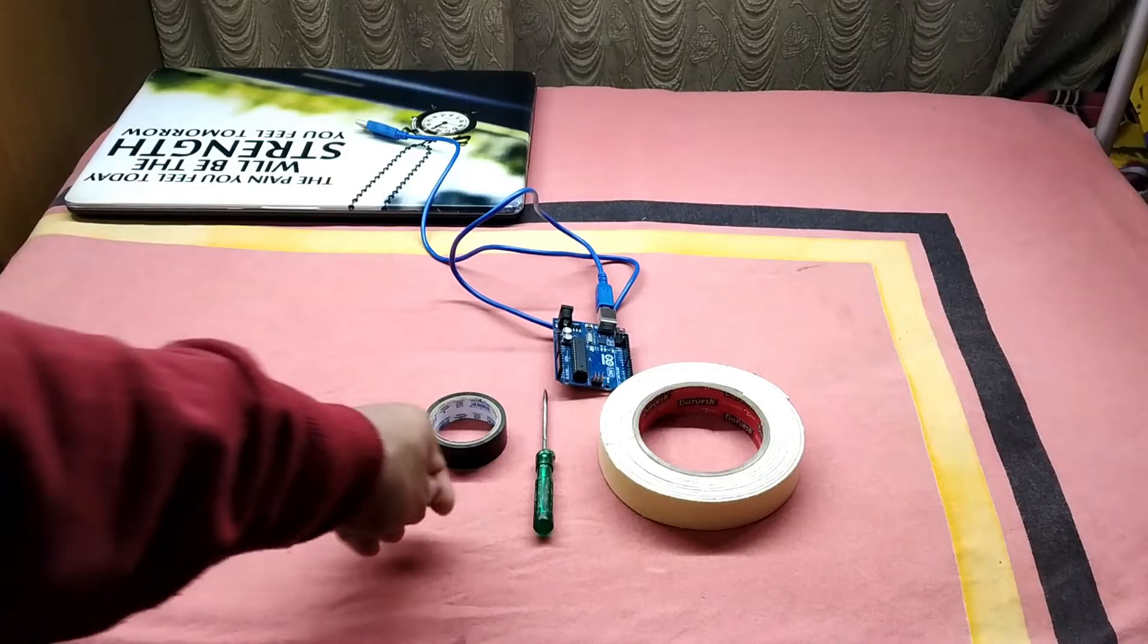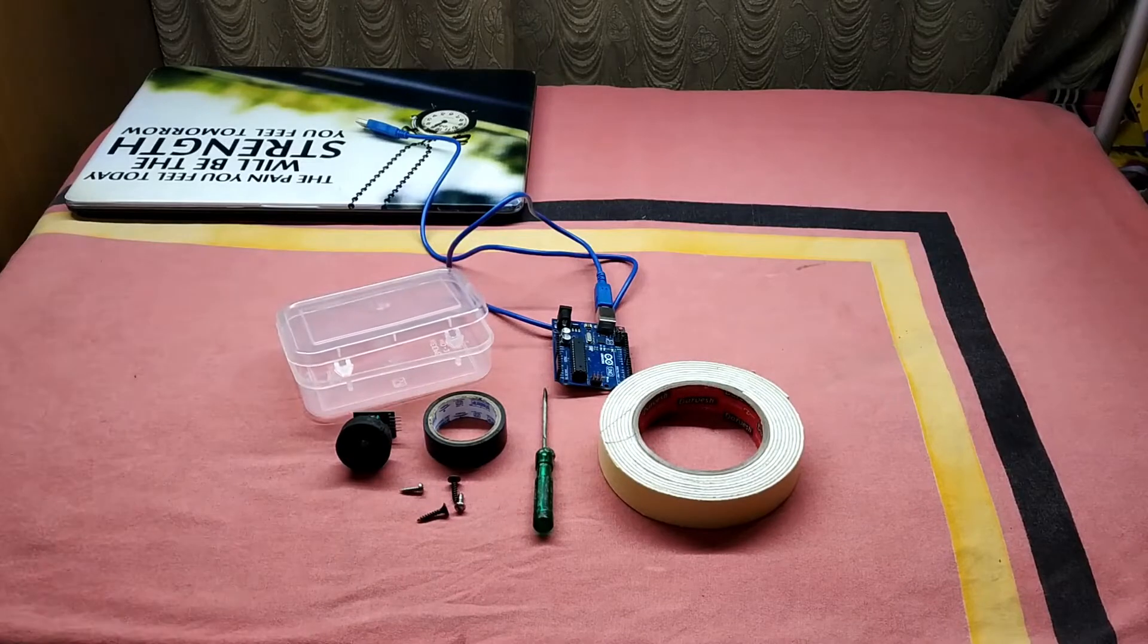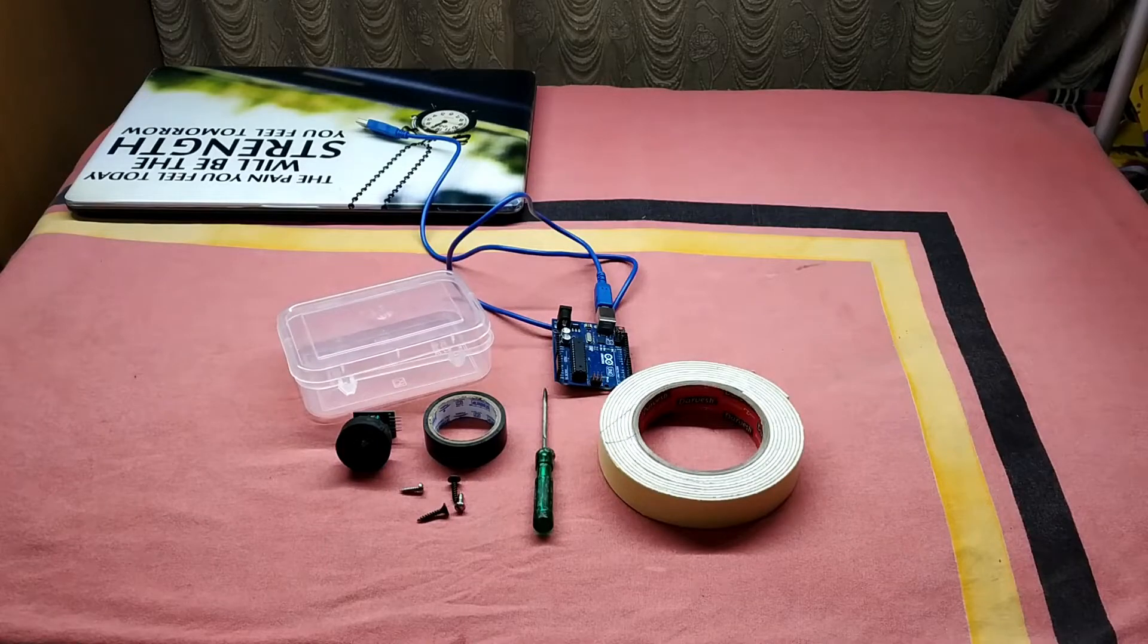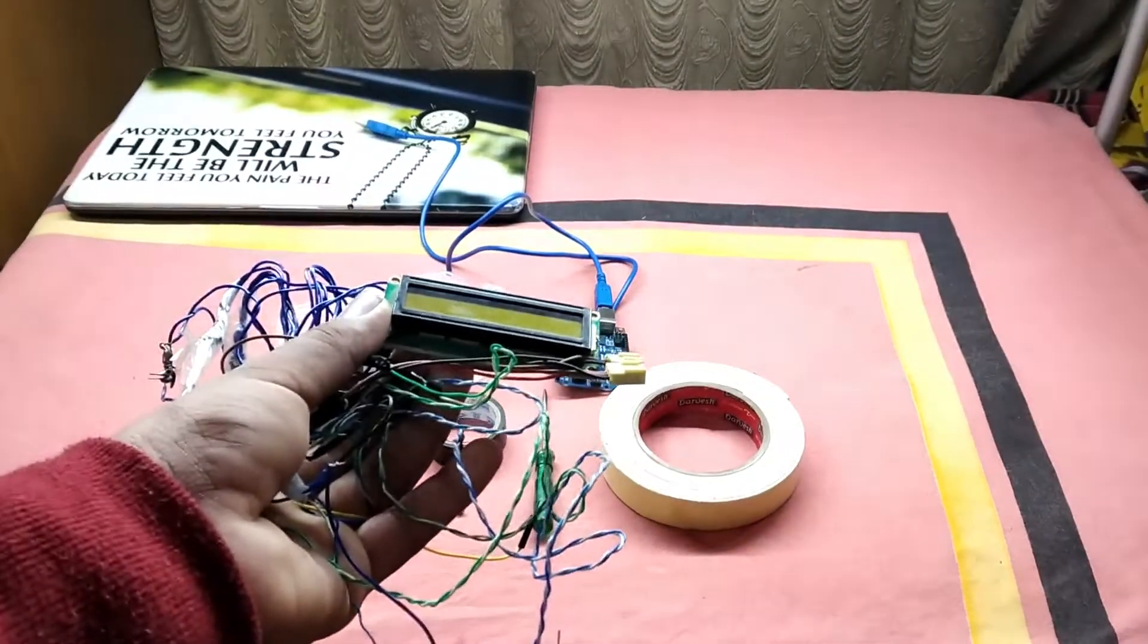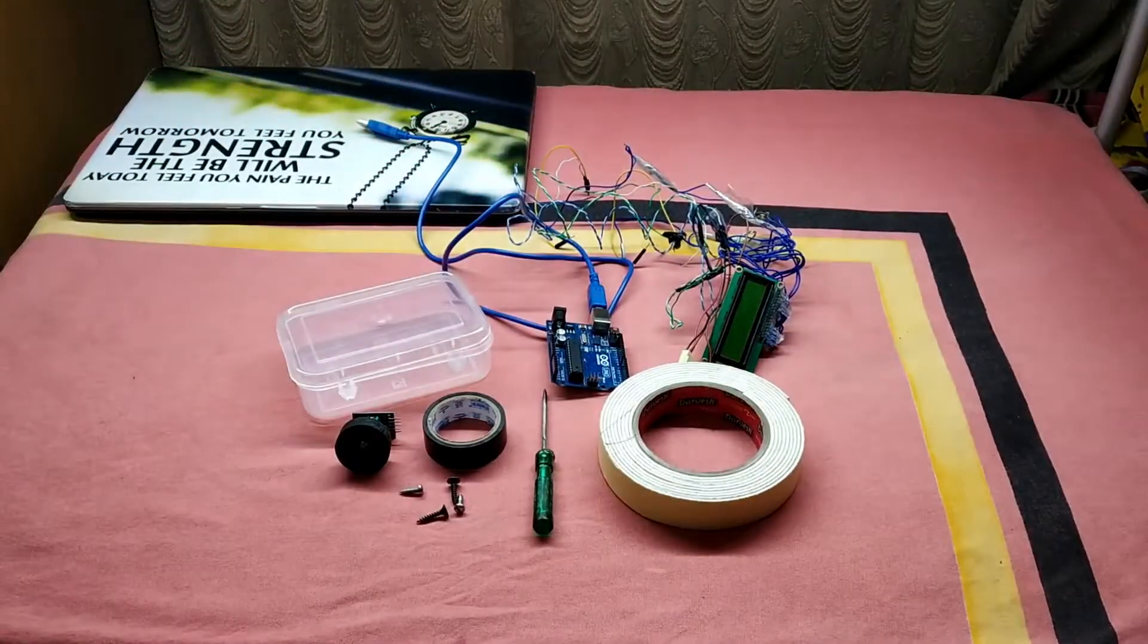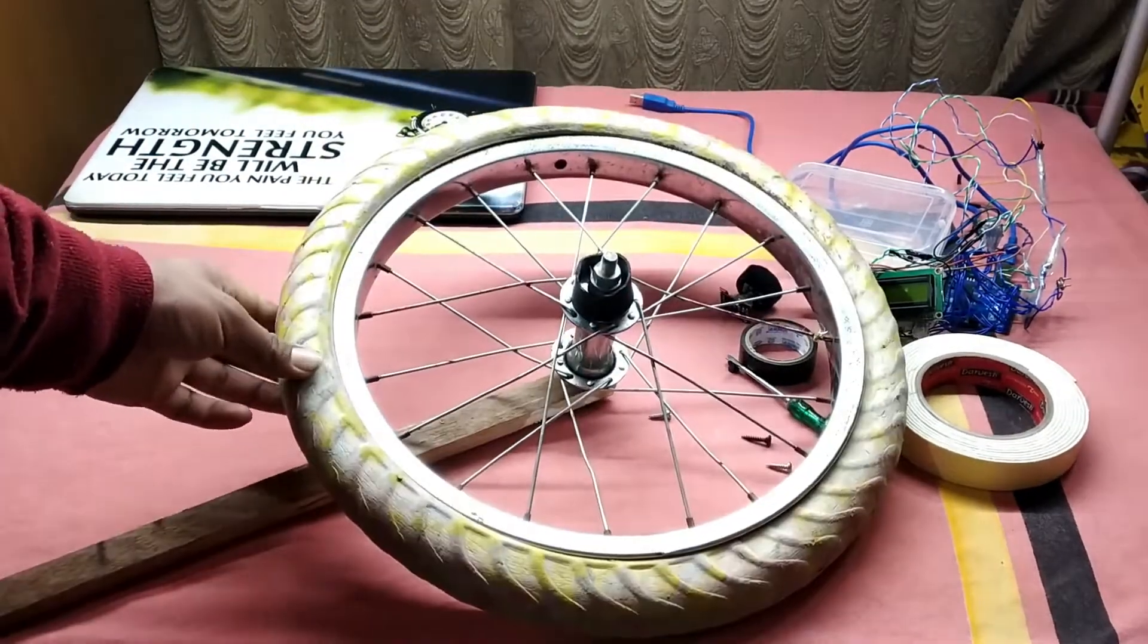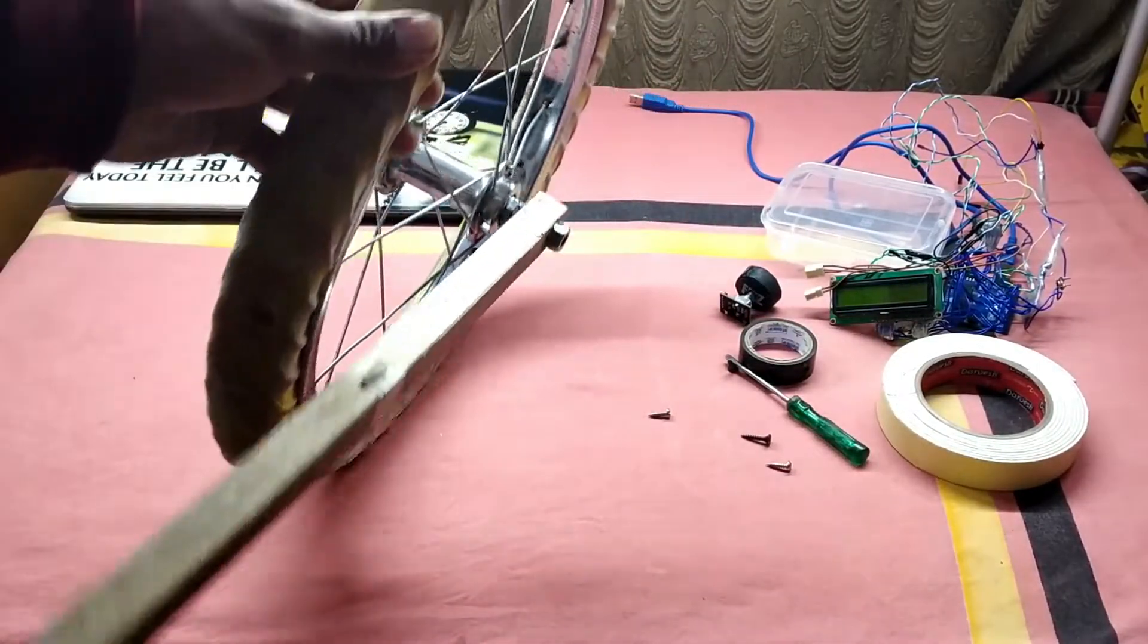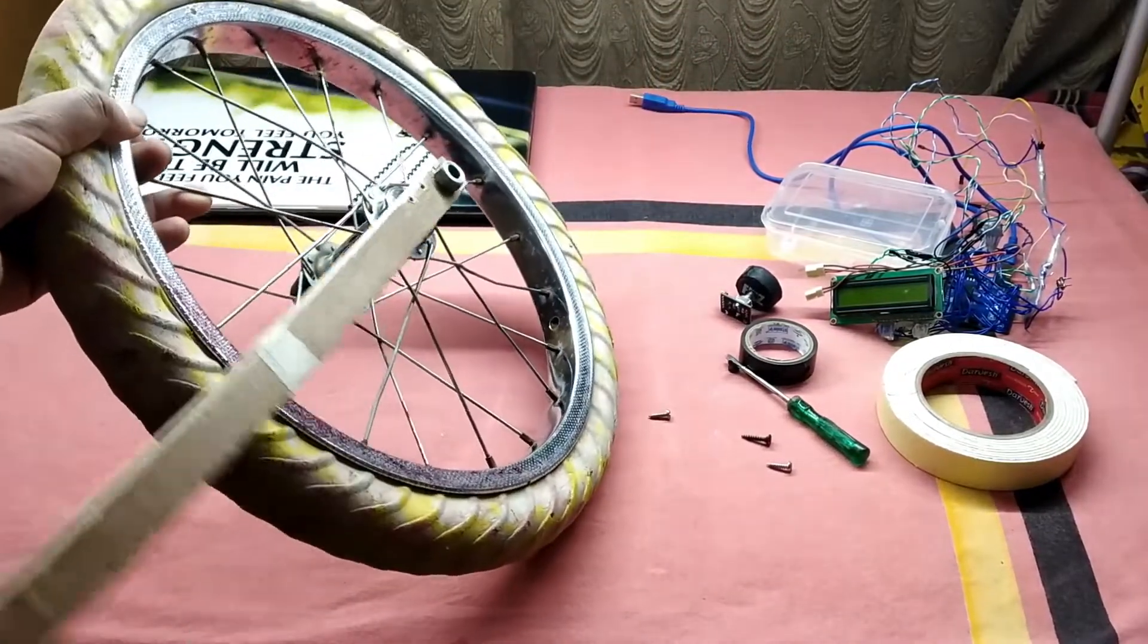You'll also need a plastic box, LCD I2C, connecting wires, and a small cycle wheel which is connected with a rod. I connected it with a wooden rod.